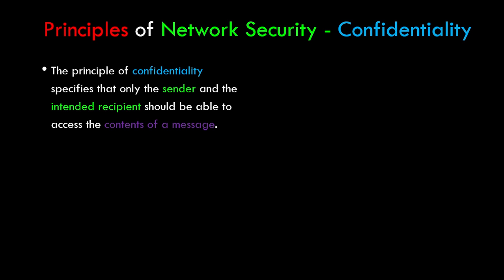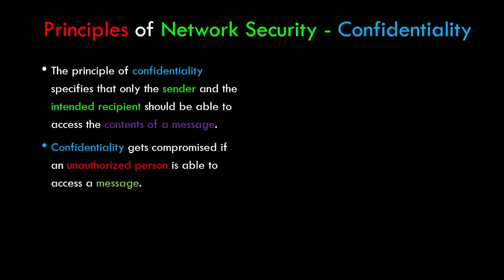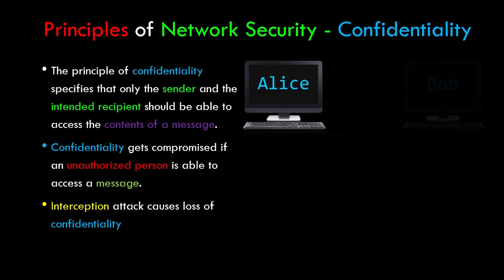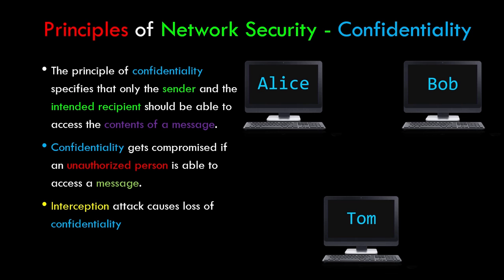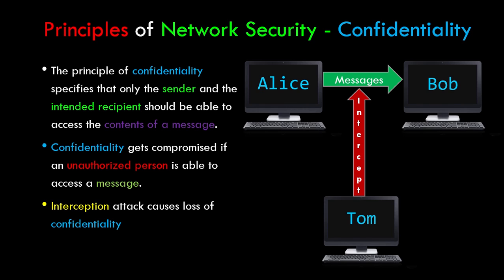The principle of confidentiality specifies that only the sender and intended recipient should be able to access the contents of a message. Confidentiality gets compromised if an unauthorized person is able to access a message. Interception attacks usually cause loss of confidentiality. As shown in the diagram, users Alice and Bob are having a conversation while an invalid user Tom intercepts their conversation, causing loss of confidentiality.